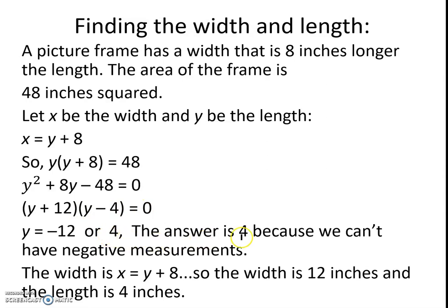The answer has to be 4 because we can't have negative measurements, so negative 12 is not a solution. To find the width, we plug it in our equation x equals y plus 8. So since we know y is 4, we put that in here, and x equals 4 plus 8, which is 12. So the width is 12 inches and the length is 4 inches.